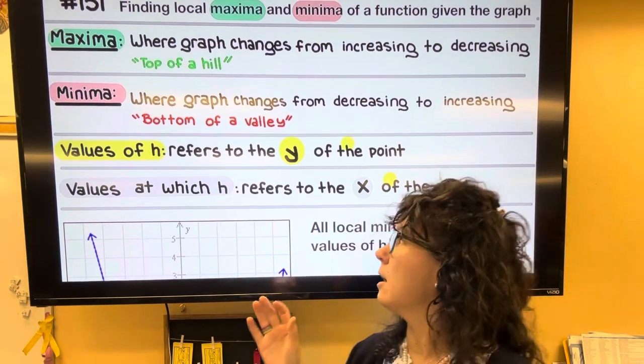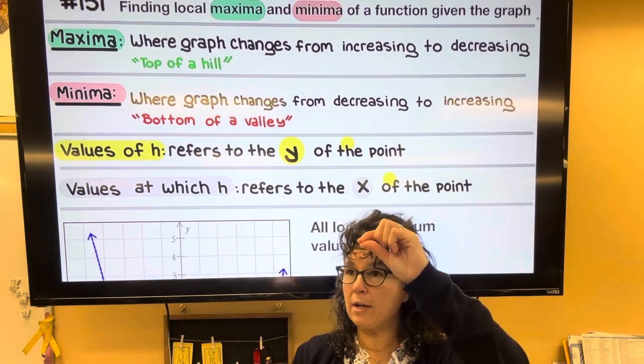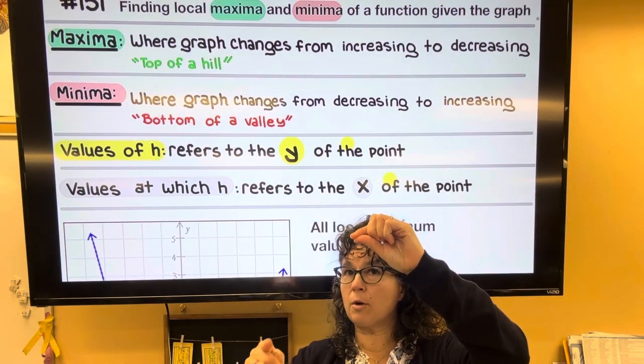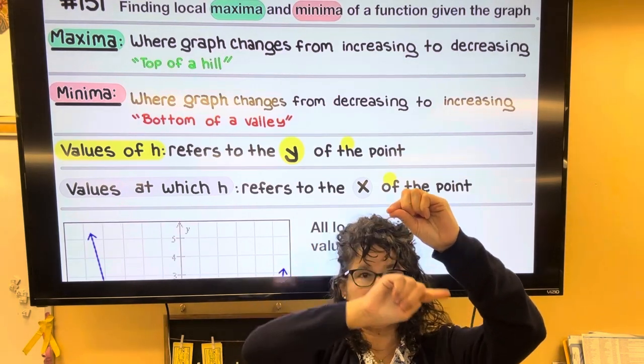But a more specific definition of a maxima is it's a point where the graph changes from going increasing or uphill to decreasing, downhill.